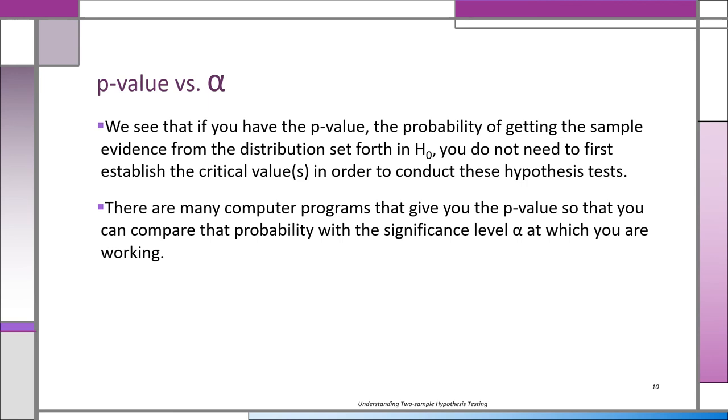For example, if you're working on an alpha of 0.05 and the computer prints out a p-value of 0.0003, you know right away to reject. It's telling you the likelihood of getting the sample evidence, if the two groups are the same, is very unlikely. If the p-value is less than alpha, you're going to reject H₀.